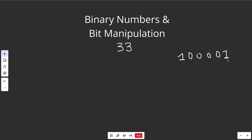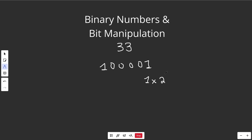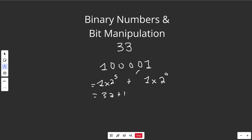Now let's check our math to see if that really works. We're claiming that 100001 is the binary representation of 33. So that means 1 times 2 to the 0, and the 0s in between don't contribute anything. Then we have 1 times 2 to the 5. In total we get 32 plus 1, which is equal to 33. So we basically just converted this back into base 10.